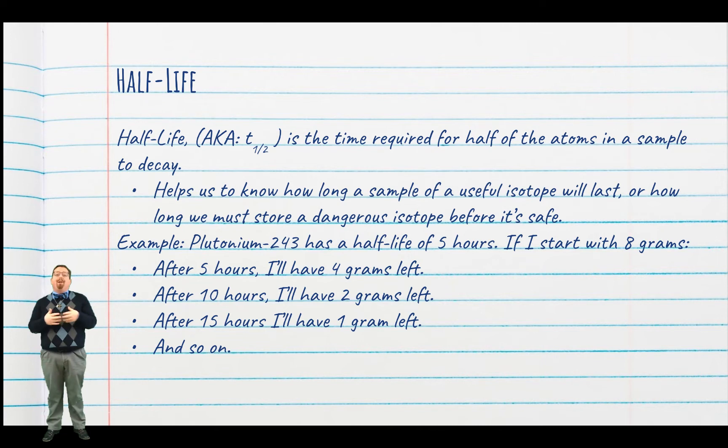The common way to discuss how fast a radioactive isotope will undergo decay is by referencing its half-life. Now, I'm not talking about the video game. The half-life of an isotope is the time it takes for half of the atoms in a sample to decay. Half-life data is important because it gives us an idea of how long we can continue to use an isotope before it's no longer effective, like in nuclear medicine. Or, how long we have to safely store a dangerous isotope before it's okay to put it back into nature, like in nuclear power plants. To give you an idea about how half-life works, let's take plutonium-243 as an example. Plutonium-243 has a half-life of 5 hours. If I start with 8 grams of it, after 5 hours I'll only have 4 grams left. Then 5 hours after that, I'll only have 2 grams left. And then 5 hours after that, I'll only have 1 gram left. This keeps going like that until you get to the very last particle.